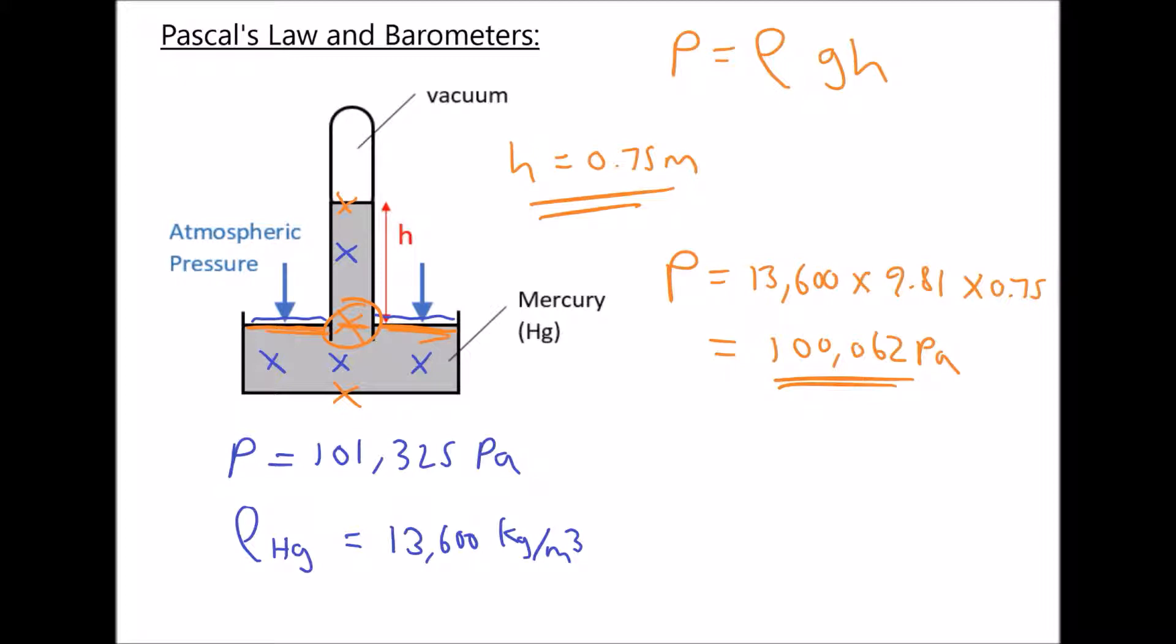So what we see here is a balance between atmospheric pressure and the pressure caused by 75 centimeters worth of mercury.